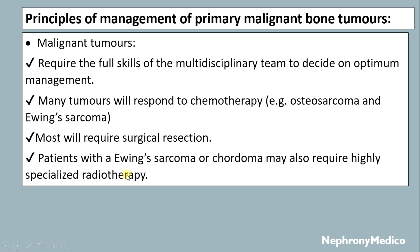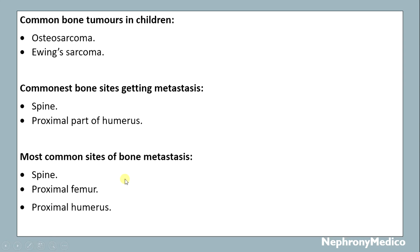Common bone tumors in children include osteosarcoma and Ewing's sarcoma. The commonest bone sites for metastasis include the spine and proximal part of the humerus. The most common sites of metastasis include the spine, proximal femur, and proximal humerus.